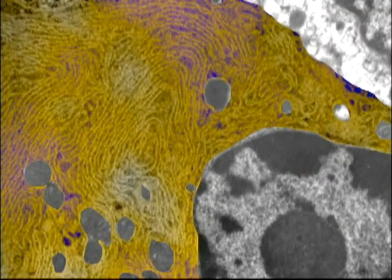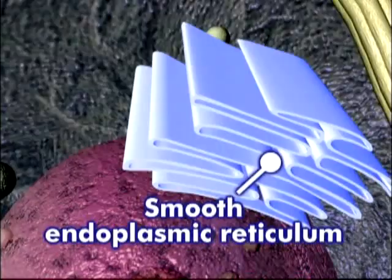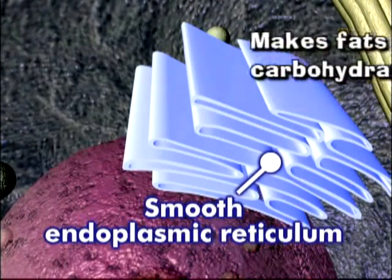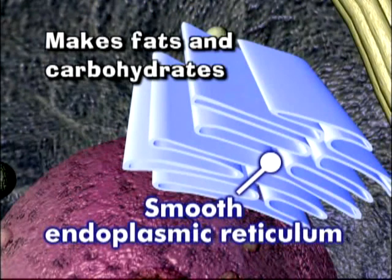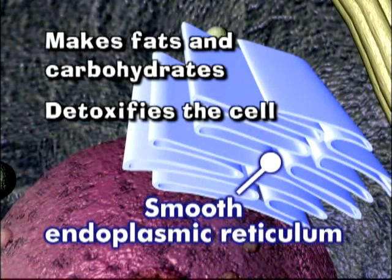The endoplasmic reticulum is attached to the nucleus and loops back and forth to provide a larger surface area for processing those nutrients. It also separates molecules that belong in the cytoplasm from those being transported to other areas of the cell. There are actually two types of endoplasmic reticulum — rough and smooth. The smooth endoplasmic reticulum synthesizes lipids, or fats, and carbohydrates. Lipids are required for growing the cell membrane and membranes of the organelles. Smooth ER also works to detoxify the cell of poisonous substances.